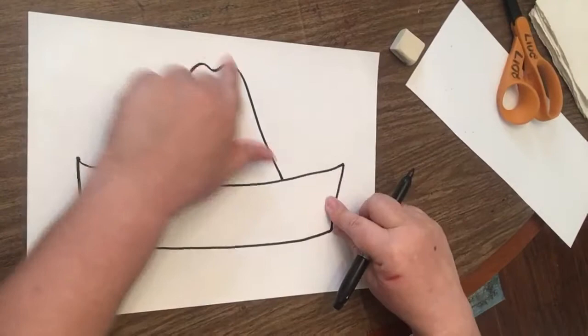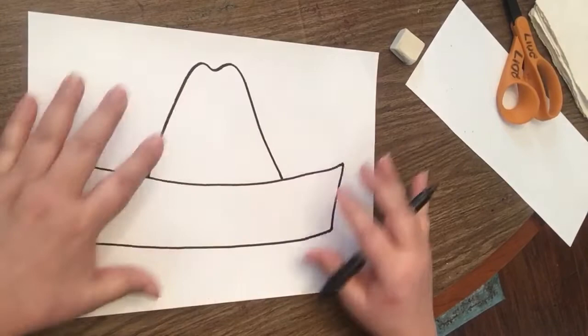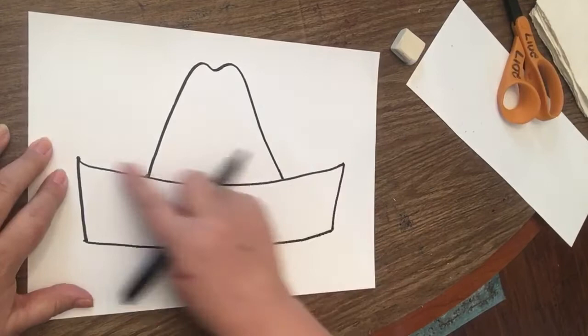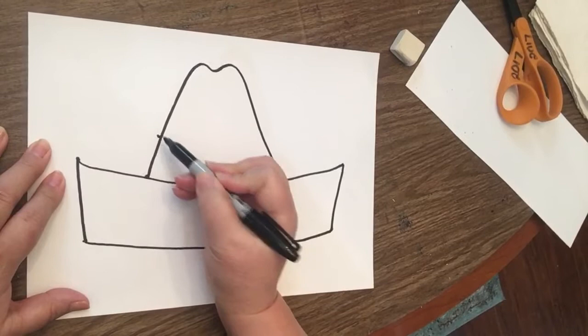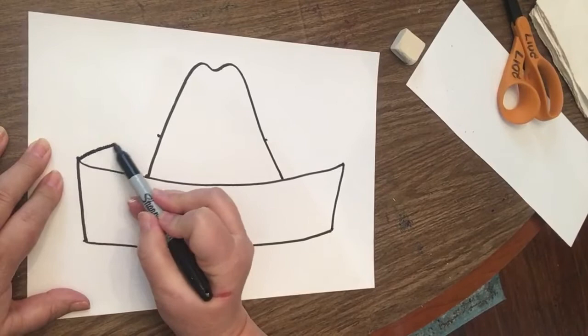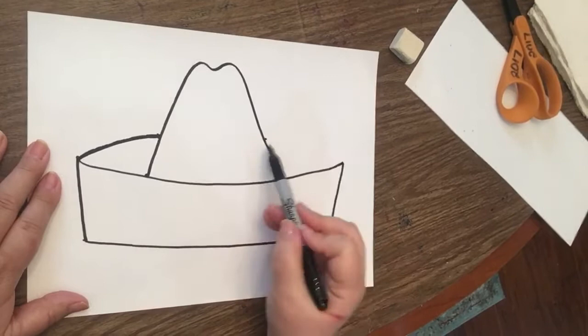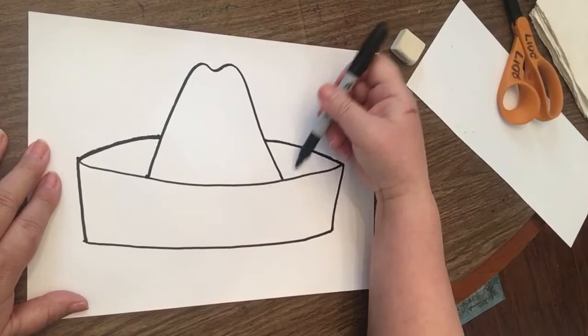Now we're going to make the inside of the hat by going from this point over to here. I'm going to connect the dots with a curved line. Here's my curve from this point to this point. Now that's the inside of the sombrero.